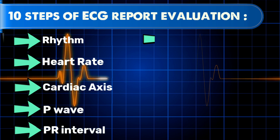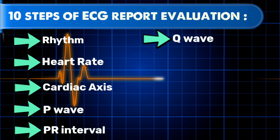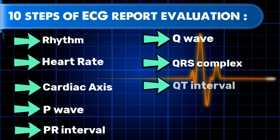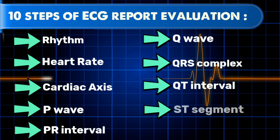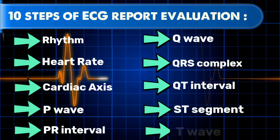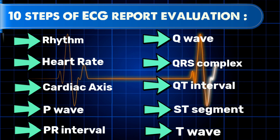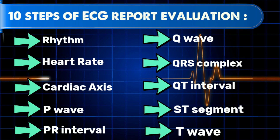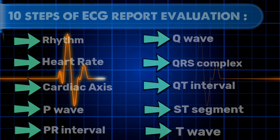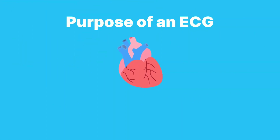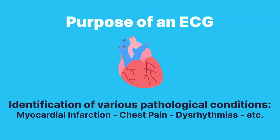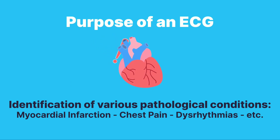The series will include basics, procedure, anatomical positioning of the leads, and the 10 important steps of ECG evaluation. The purpose of an ECG includes identification of various pathological conditions, such as MI, chest pain, and dysrhythmias.